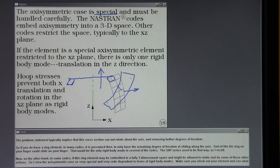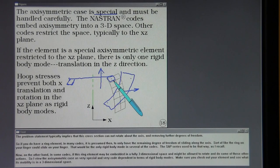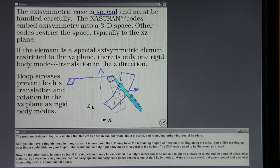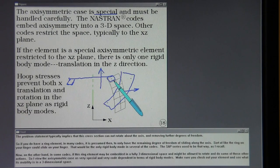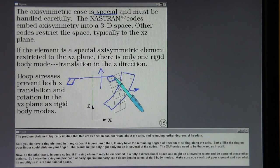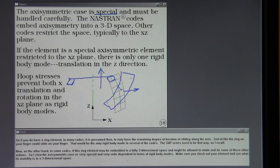Now, on the other hand, in some codes, if this ring element may be embedded in a fully three-dimensional space and might be allowed to rotate and do some of these other actions. So I view the axisymmetric case as very special and very code dependent in terms of rigid body modes. Make sure you check out your element and see what its mobility is in a three-dimensional space.